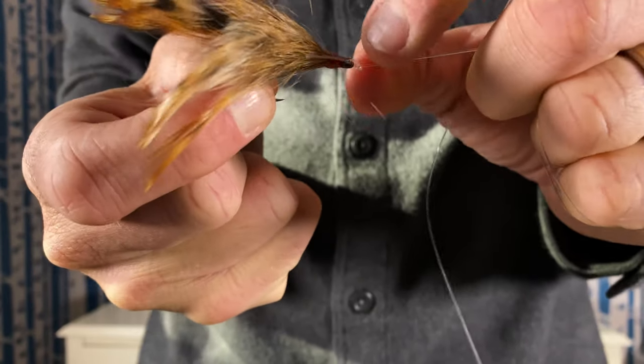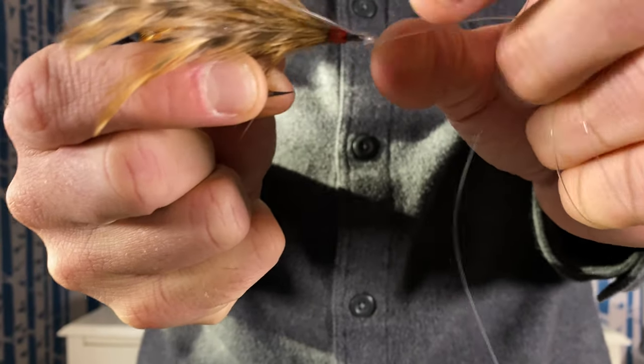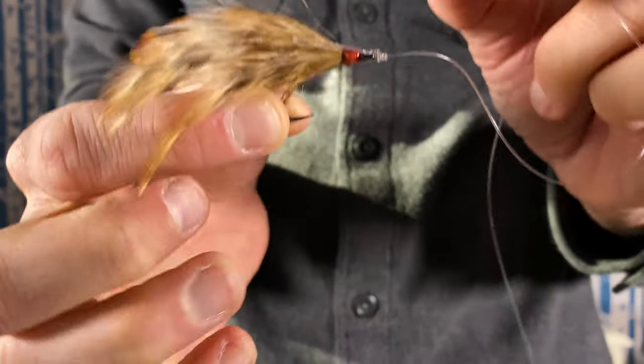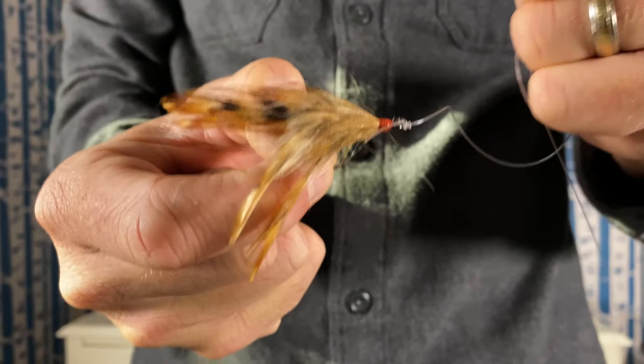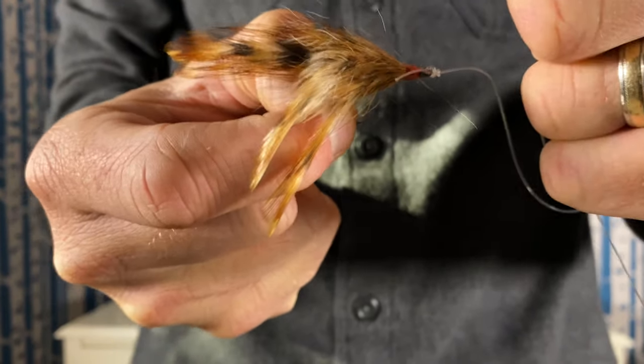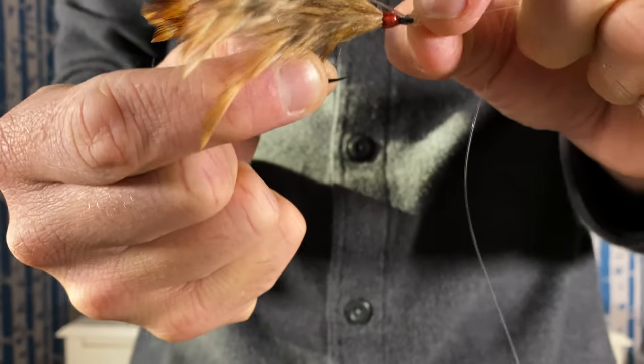So we tie that knot, we lick it, we pull it slow and we pull it hard so it cinches all up nice and tight. If the knot isn't seated correctly it can break when you hook a fish or have a snag and put tension on that line - you can pop the knot. So having it cinched down is going to be pretty critical.